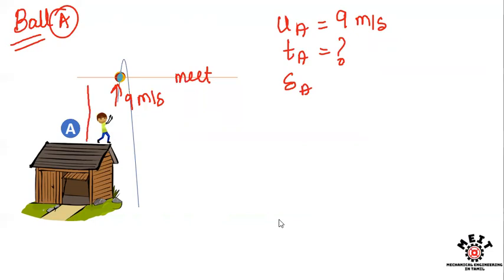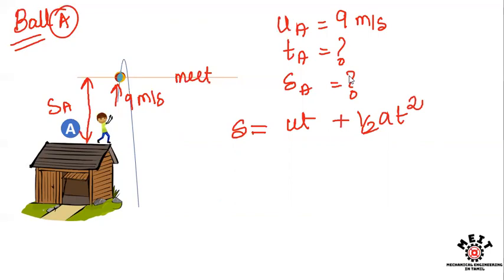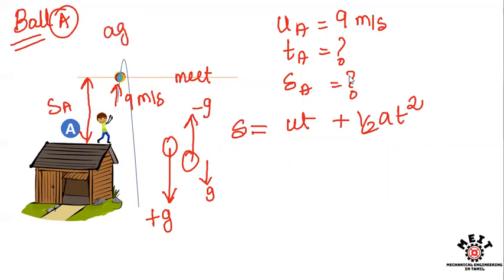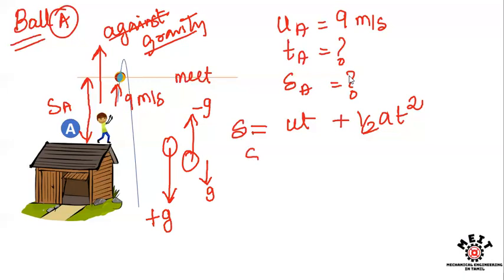The meeting point equation is S = ut + ½at². Since the balls are thrown against gravity, the equation becomes S = ut − ½gt².